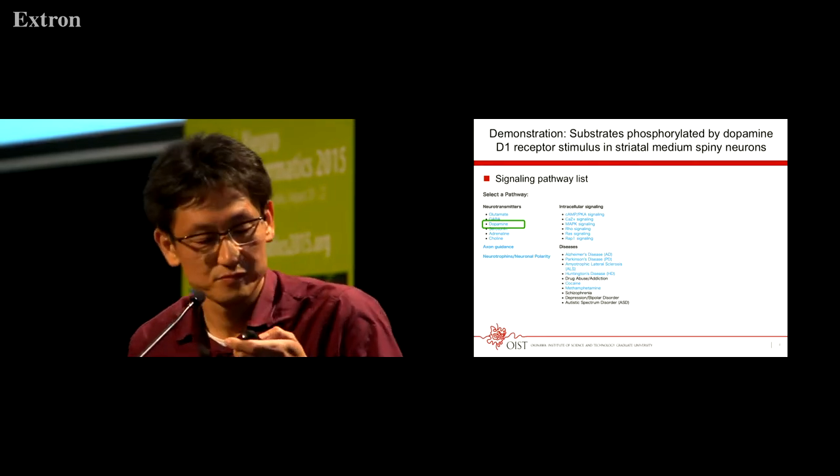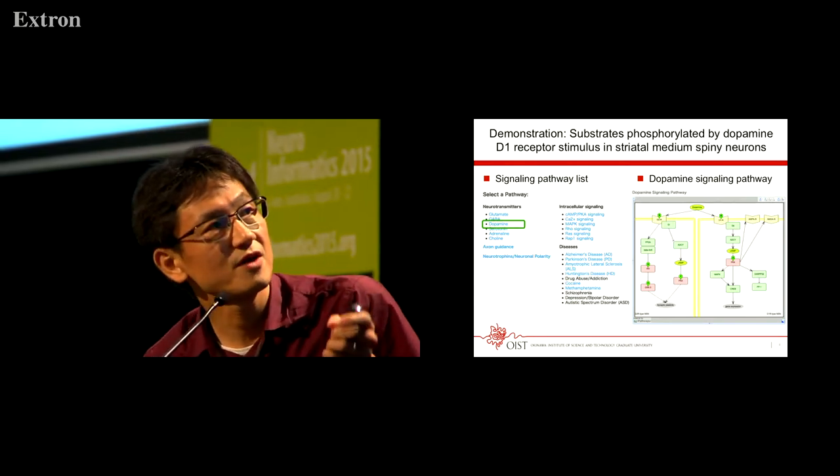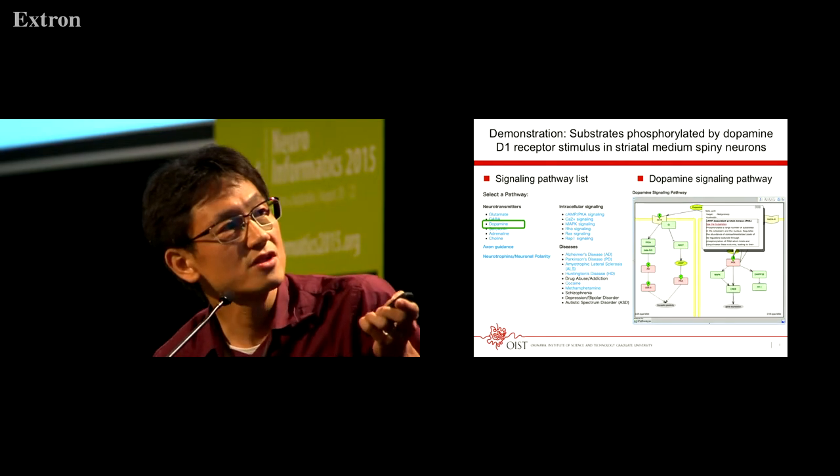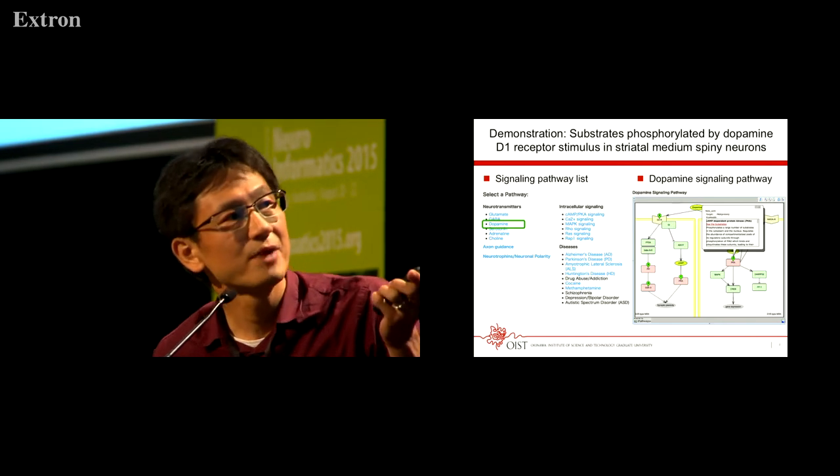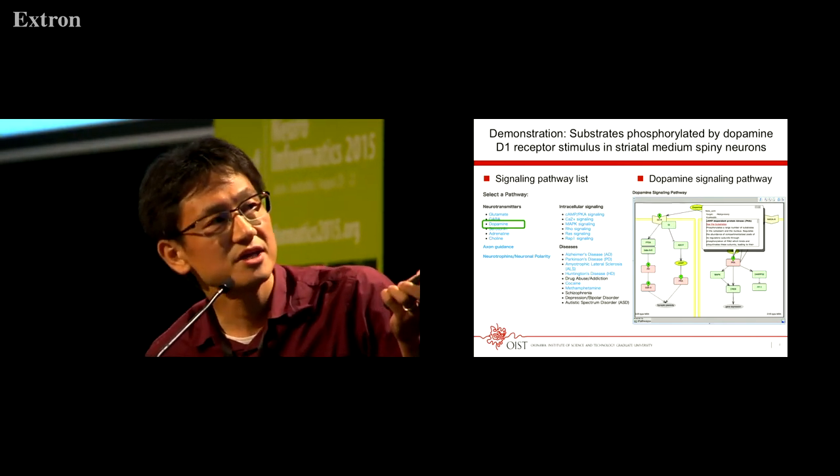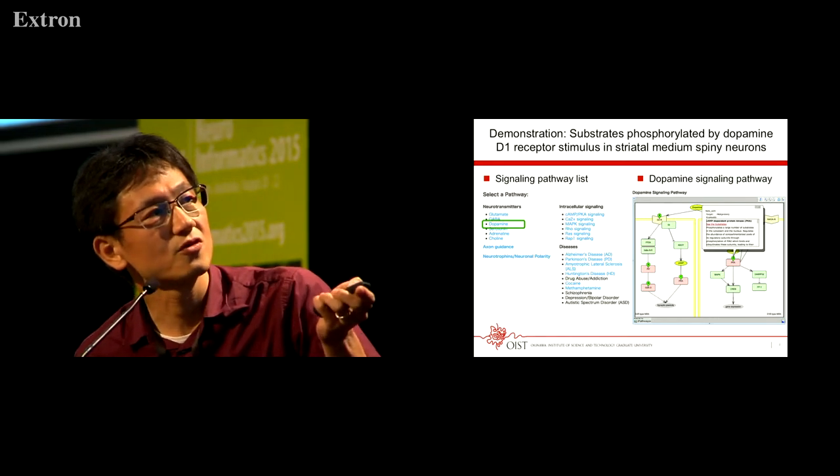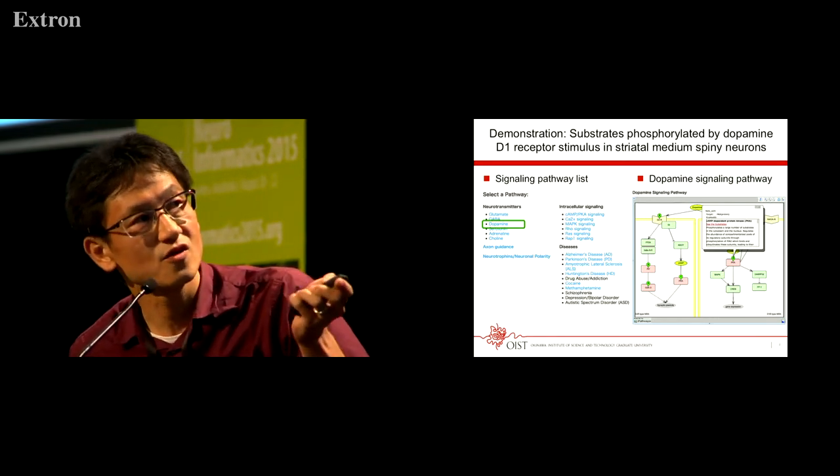we can see the signaling pathway diagram related to dopamine, in which the kinases are highlighted by tags. By clicking the tag, we can see the explanation of the kinase and also the hyperlinks to the list of substrates.